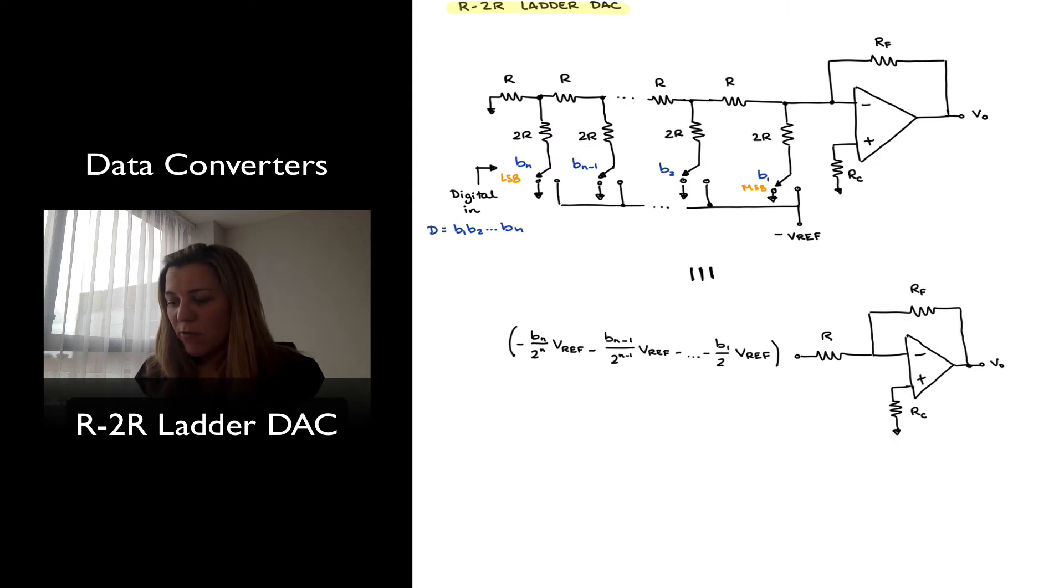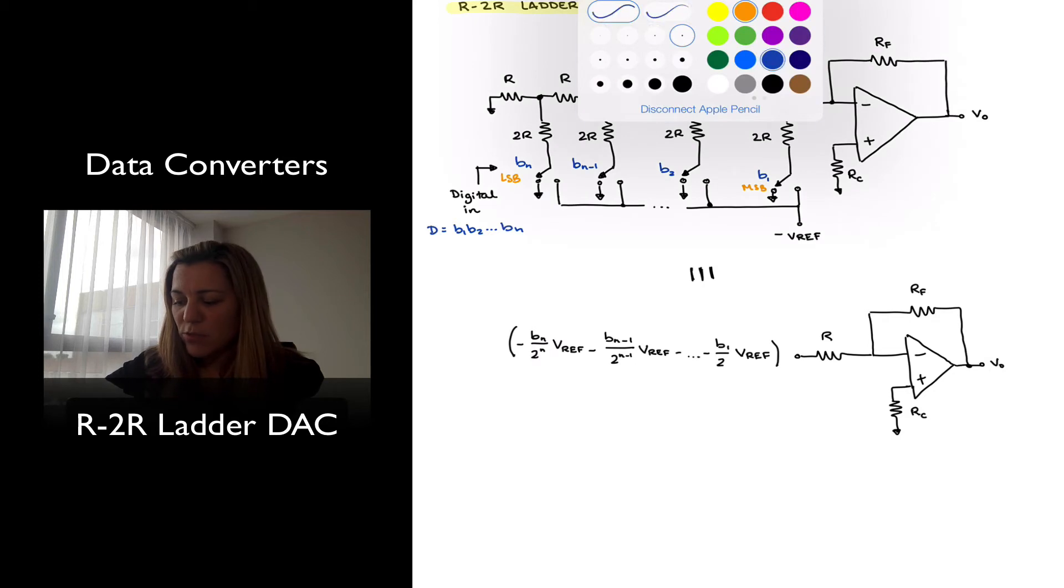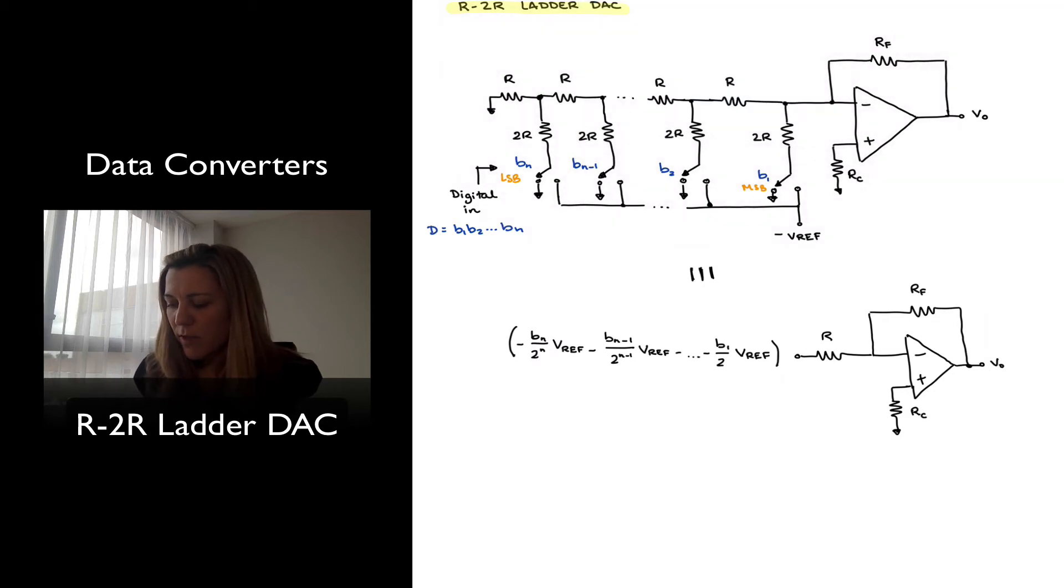And so it will be starting from my most significant bit, which is the last one here. I will have VREF times B1 divided by 2. For Bn minus 1, I will have VREF times Bn minus 1 divided by 2 to the n minus 1, and VREF Bn divided by 2n. So in other words, if I were to rewrite this expression and just take VREF out of the equation, my input will be equal to negative VREF.